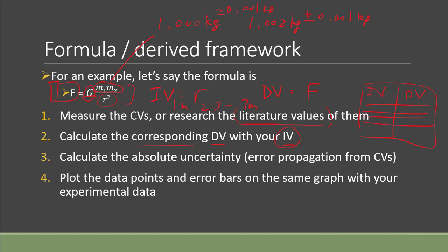Step three is similar to what you did for your own data - you can also do the absolute uncertainty calculation. That means doing the error propagation method with all the absolute errors you know, like what you learned in chapter one or what you did in the earlier section for your experiment data.